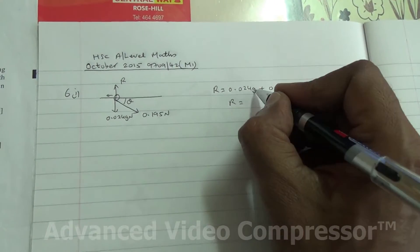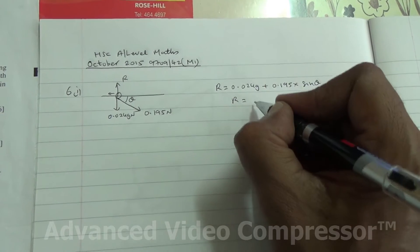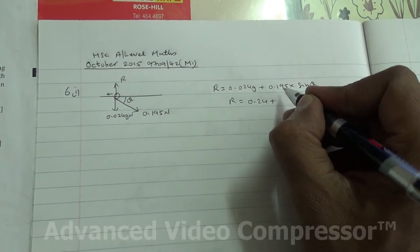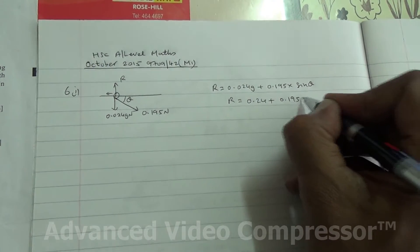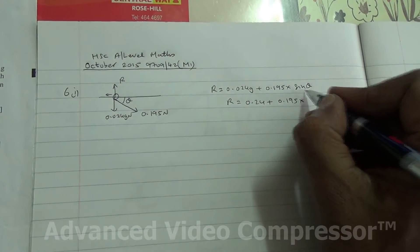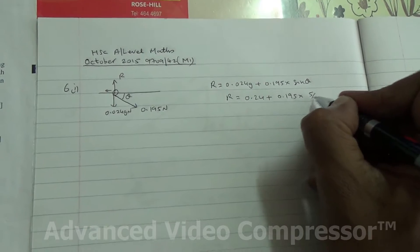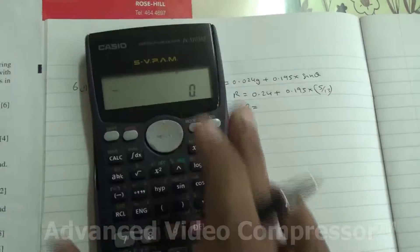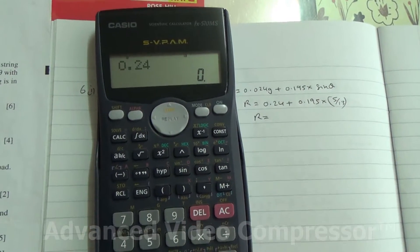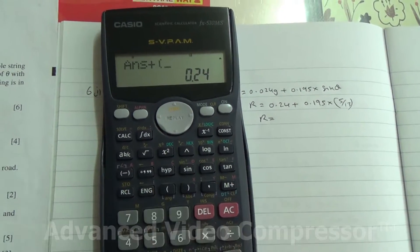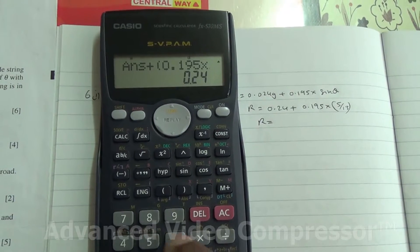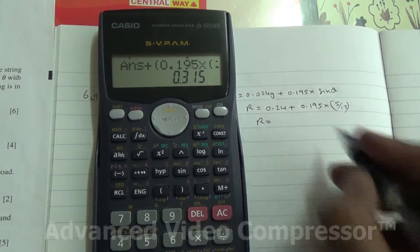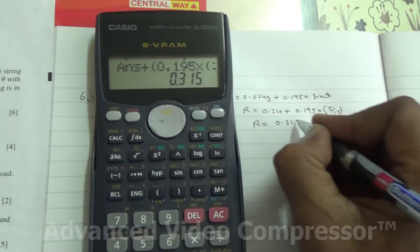So R is going to be, g is 10, so 10 times it's going to be 0.24 plus 0.195 times sine of theta is given in the question as 5 over 13. And that's going to give us 0.315 newton.